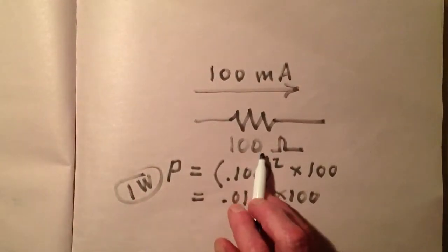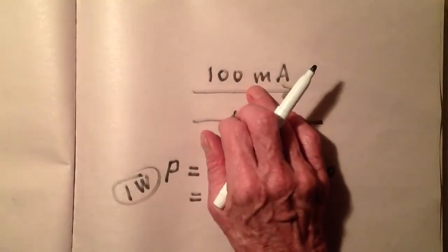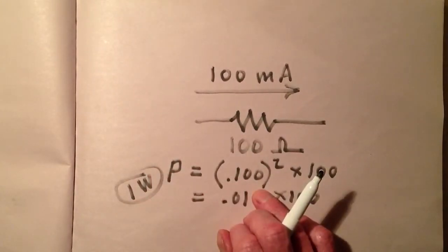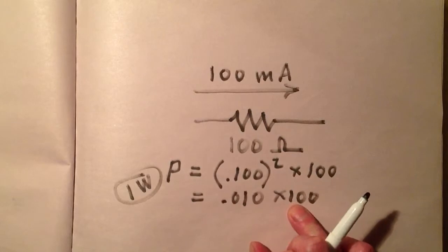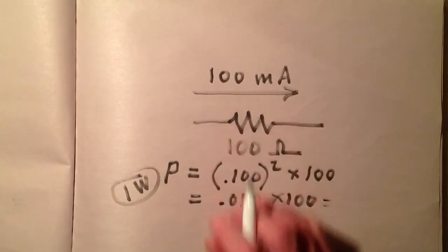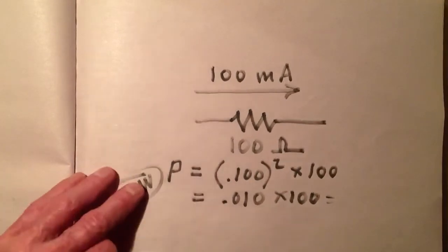Let's take another example. That same 100 ohm resistor — let's suppose we try to drive 100 milliamps through it. Remember, milliamps are thousandths of an amp, so 100 milliamps is one tenth of an amp. We square that: we get one one-hundredth of an amp squared. We multiply by the resistance in ohms and we get 1 full watt dissipated through that resistor. If it's a quarter-watt or half-watt resistor, we're in trouble.